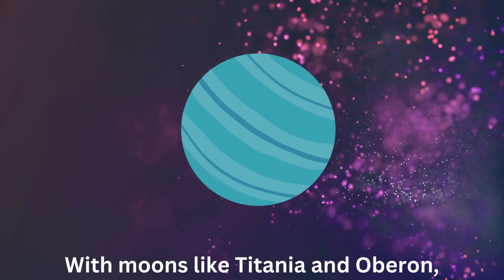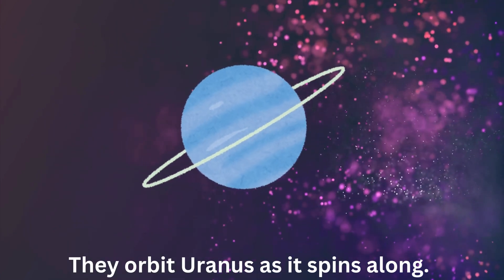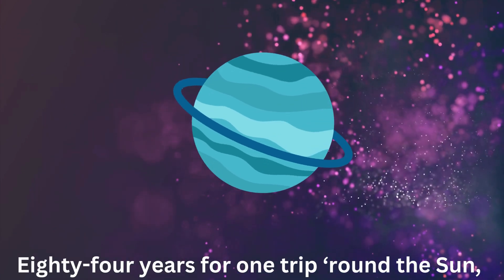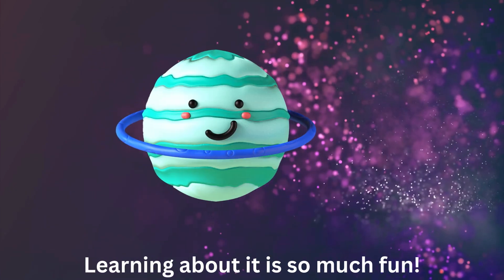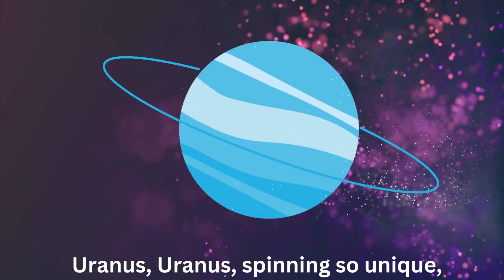With moons like Titania and Oberon, they orbit Uranus as it spins along. Eighty-four years for one trip round the sun—learning about it is so much fun!